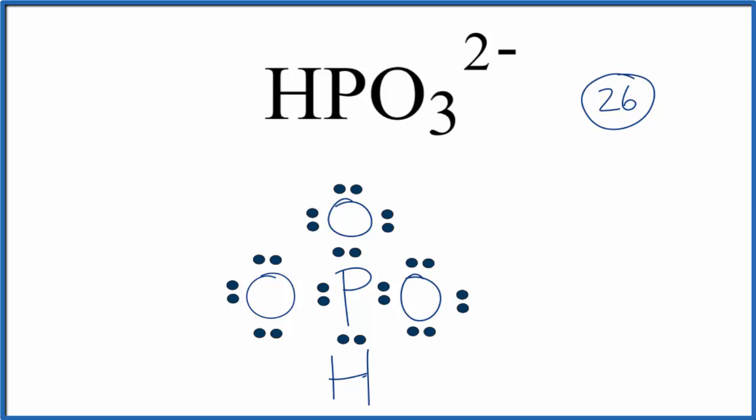If we look at the formal charges for this, we'll see that each of the oxygen atoms has a negative 1 formal charge. And the phosphorus has a plus 1. So for our formal charges, if you add these all up, you do get a 2 minus. That's the ionic charge. That makes sense. But we can do a little bit better here.